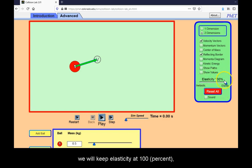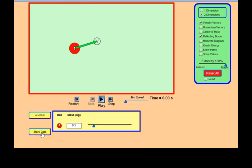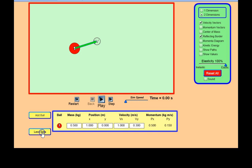We will keep elasticity at 100% and keep the reflecting border. We will also fine-tune our simulation with more data and place the ball close to the right edge of the borders.